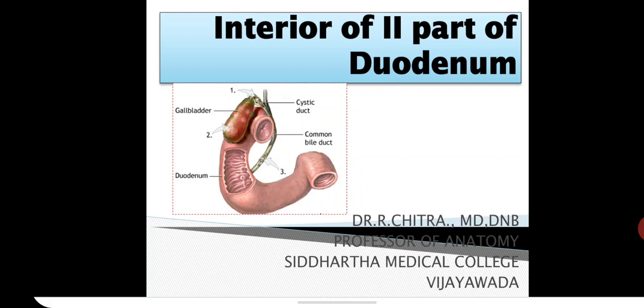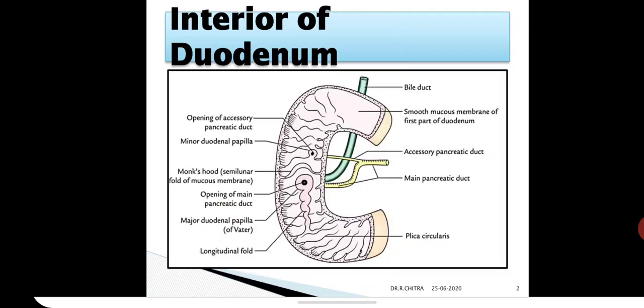They are permanent mucosal folds thickly set in the duodenum. You can see in this image the circular mucosal folds. In the second part of the duodenum we have the openings of the ducts. That is the purpose of seeing the interior of the second part of the duodenum.